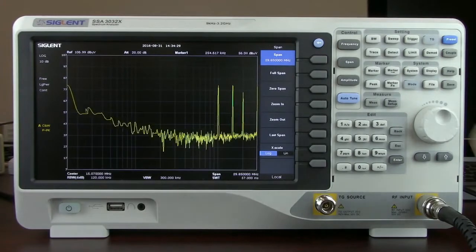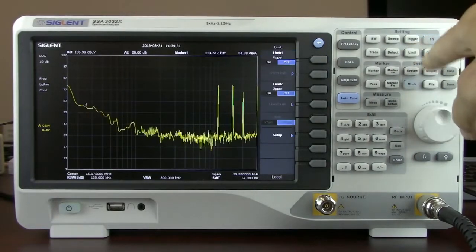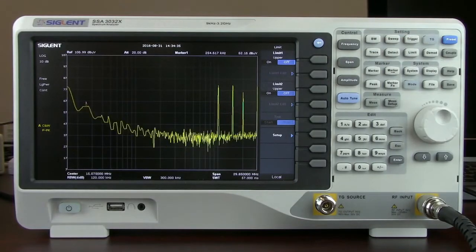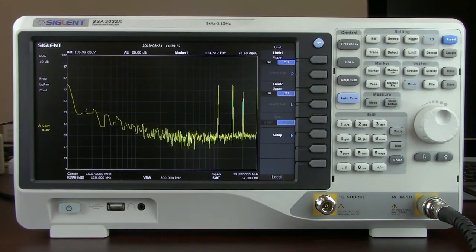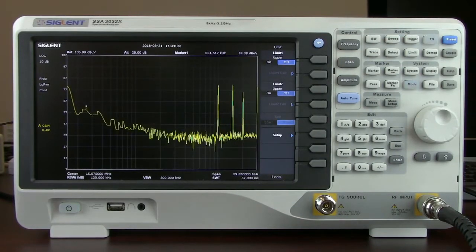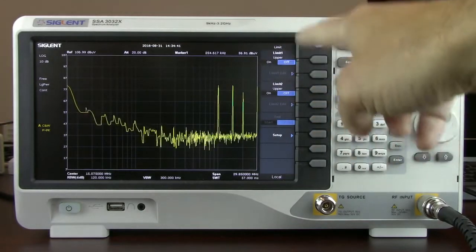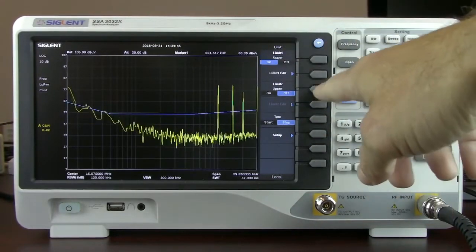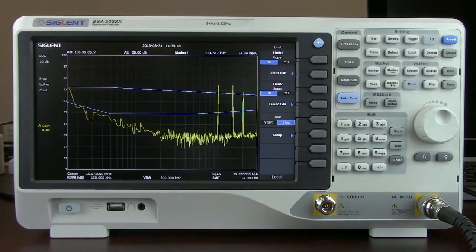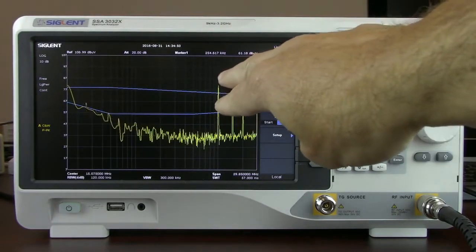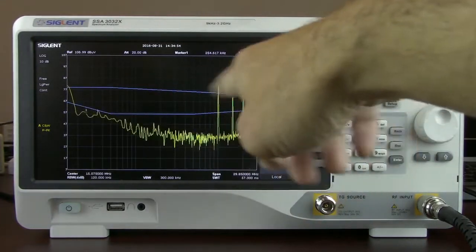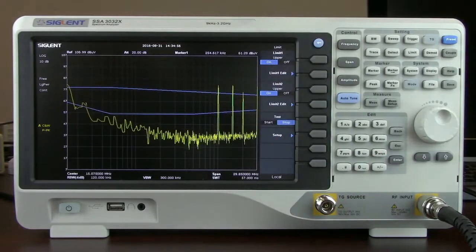And now we can enable limits. Pressing the limit key, we've got two limit lines. Many spectrum analyzers will not have two full limit lines. They'll have an upper and a lower. In this case, we've got two limit lines that we can select to be upper or lower. In this case, we're just going to turn on limit line 1 and turn on limit line 2. Now we can visualize the two limit lines that we need to meet or we may need to meet for this particular application. And then our electromagnetic performance of our device under test shown under the yellow trace here.